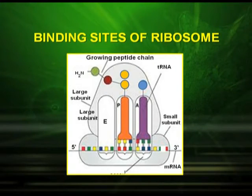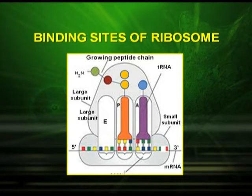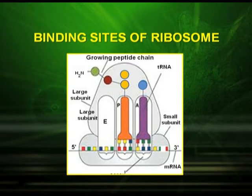Let us look at the binding sites of ribosomes. There are two important sites: one is called the A site and the other is called the P site. The A site is the amino acid binding site and P is called the peptidyl site. Now let us study the steps of translation.